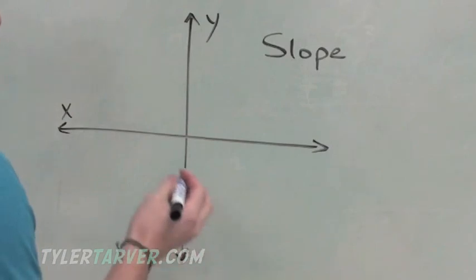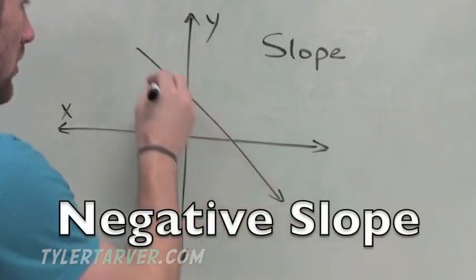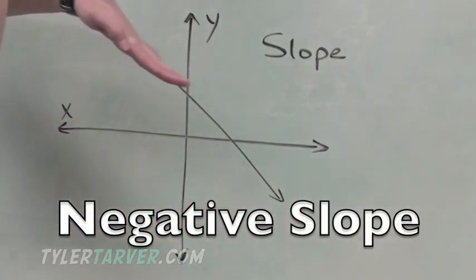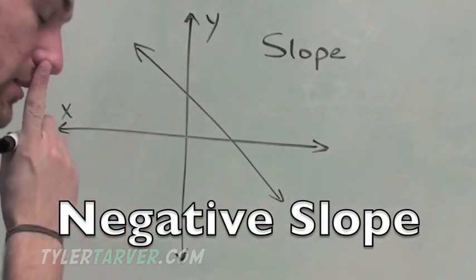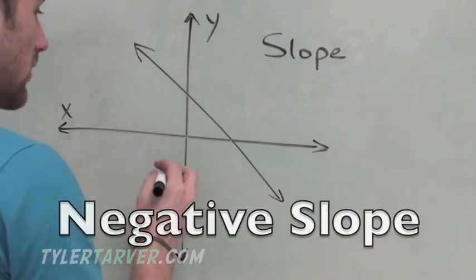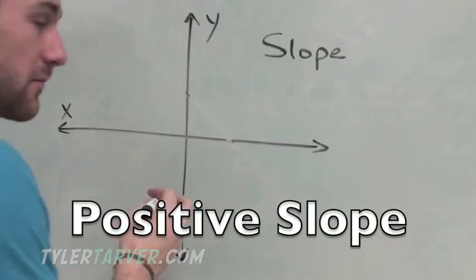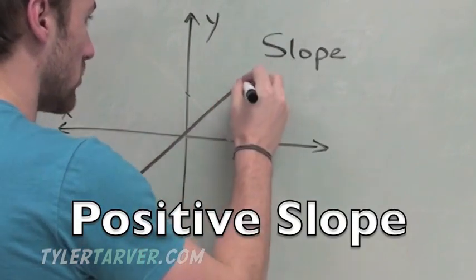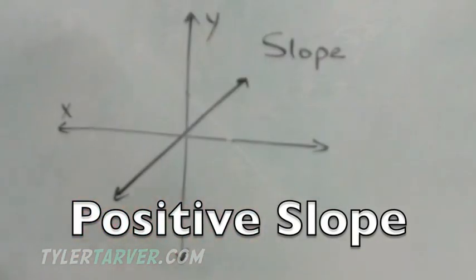Here's an example. This right here, this line is falling from left to right, just like you read a book. It's going left to right and it's falling. That is called a negative slope. This line right here is going up from left to right. That is a positive slope.